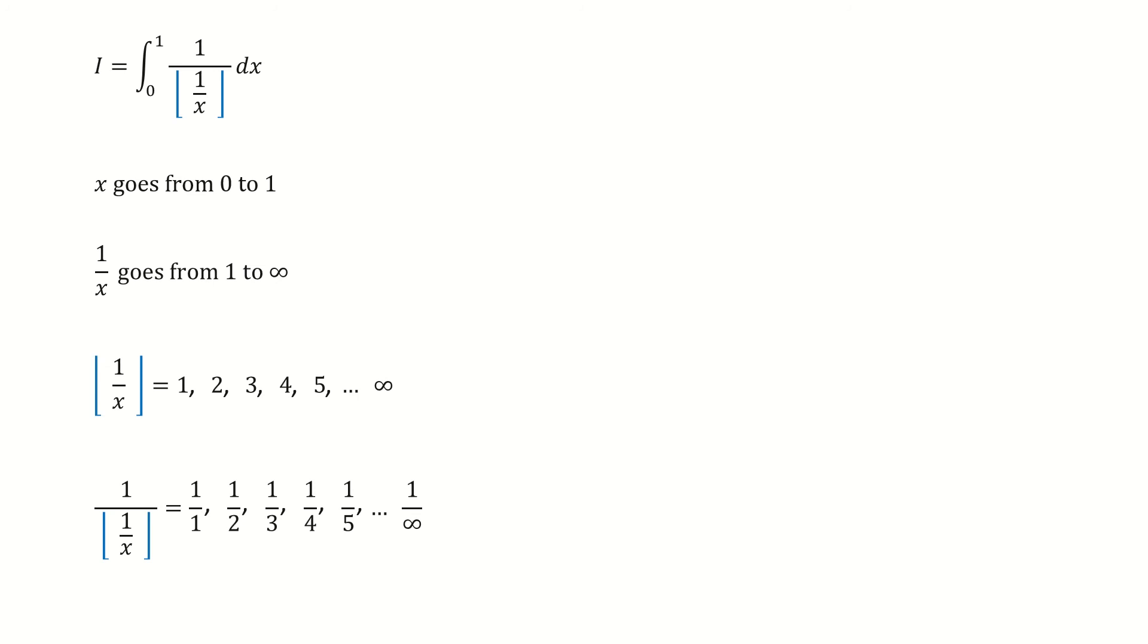If we take the reciprocal again, then this integrand function will give the discrete values, such as 1, 1 over 2, 1 over 3, and so on. And here is a plot for the integrand function. So it's like a staircase.